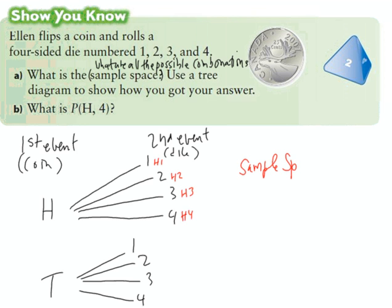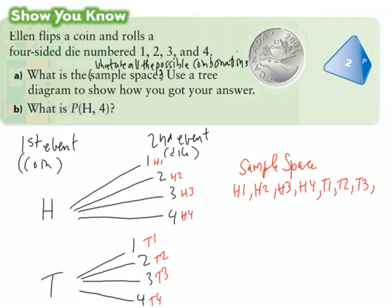So in our sample space we have H1, H2, H3, and H4 — those are four possible combinations. Over here we have tails one, tails two, tails three, and tails four — four more possible outcomes. So those are all the possible combinations in our sample space: there are eight of them.